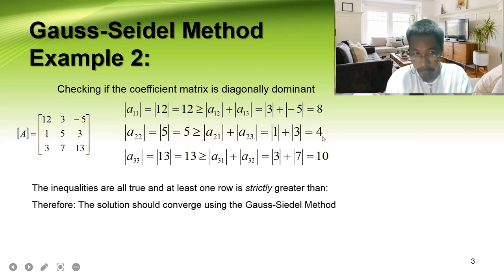For this one, 3 plus 5 is 8, so 12 is greater than 8. For row 3, 13 must be greater than 3 plus 7, that is 10, so that is correct.